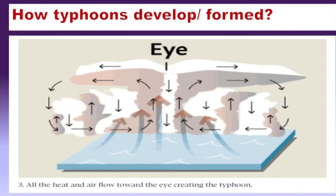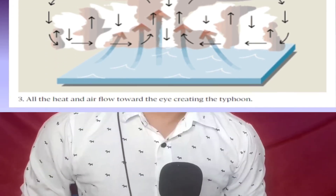In step three of typhoon formation, all the heat and airflow move toward the eye, creating the typhoon. As liquid molecules are heated, they change into gas and rise upward. That rising warm gas meets cooler air in the atmosphere, and the difference between warm and cold air causes the spinning circular motion characteristic of typhoons.